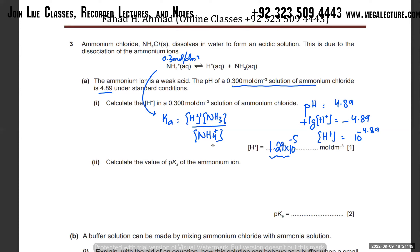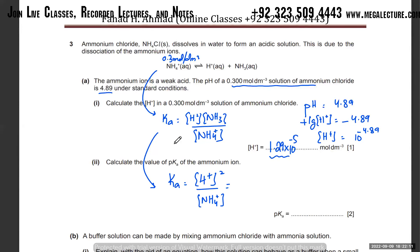Now calculate the pKa of the ammonium ion. Ka can be written as [H⁺]² divided by [NH₄⁺] concentration. We already calculated [H⁺] = 1.29 × 10⁻⁵ from the pH. So Ka = (1.29 × 10⁻⁵)² divided by [NH₄⁺] concentration, which is 0.3 mol dm⁻³.